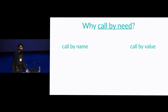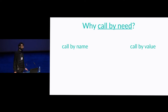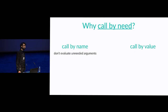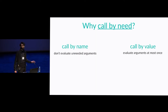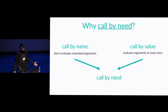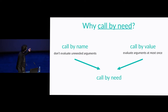First, why call by need? As we have seen already, we have two well-known approaches in programming languages — evaluation orders: call by name and call by value — and both have some advantages. One advantage of call by name is that it doesn't evaluate unneeded arguments, while call by value evaluates all arguments at most once. We can join these two properties in call by need to evaluate only needed arguments and at most once.